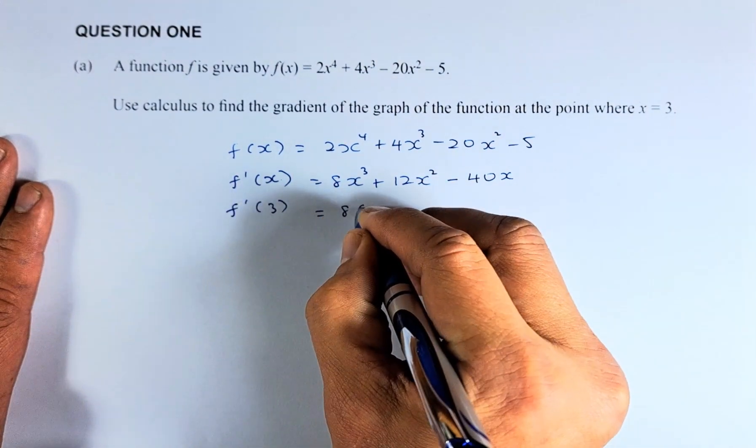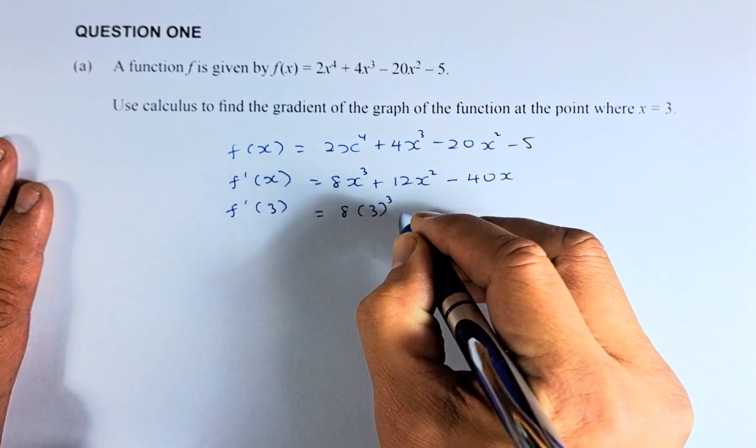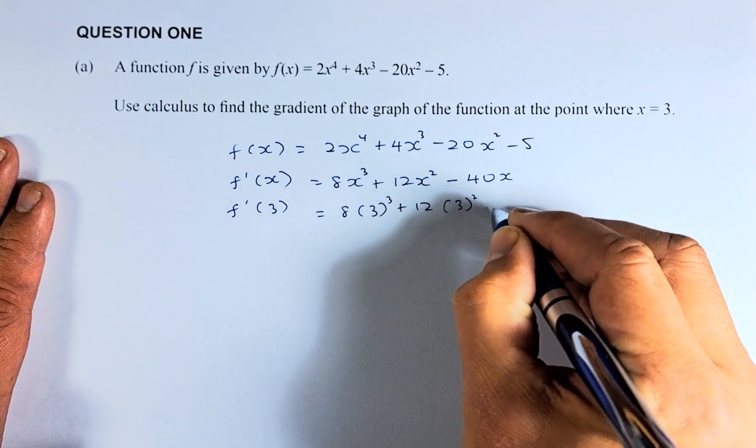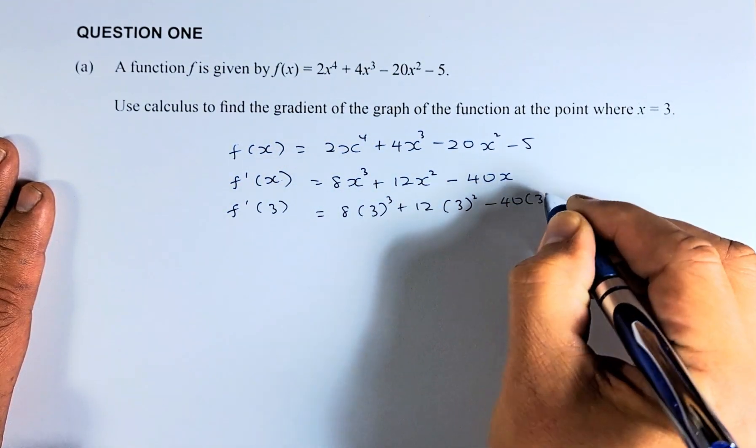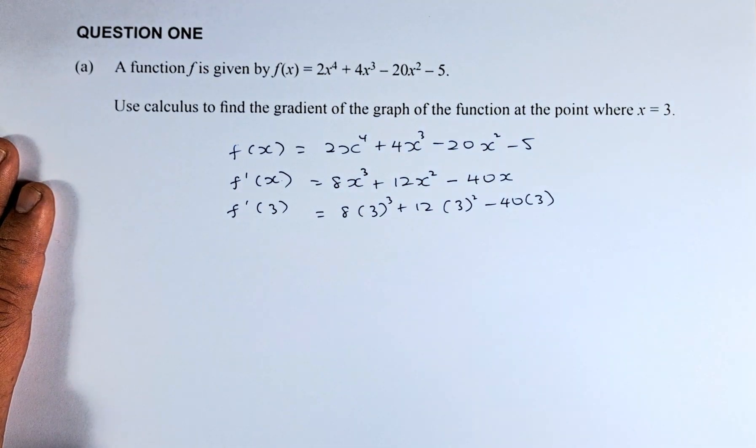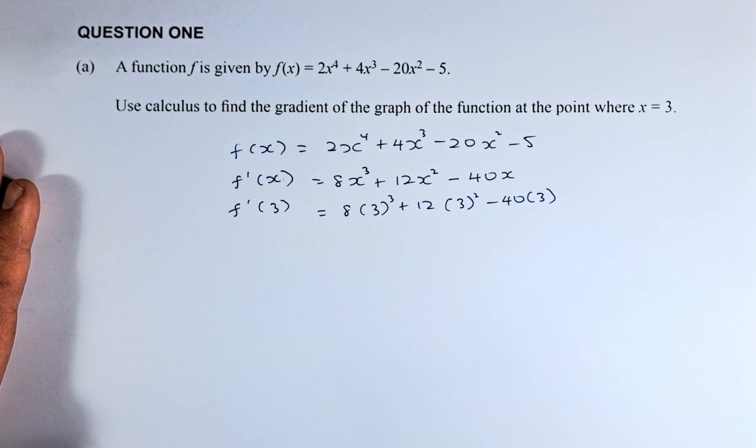we are going to put 8 times 3 to the power of cube plus 12 times 3 squared minus 40 bracket 3. Now we are going to try to solve this.